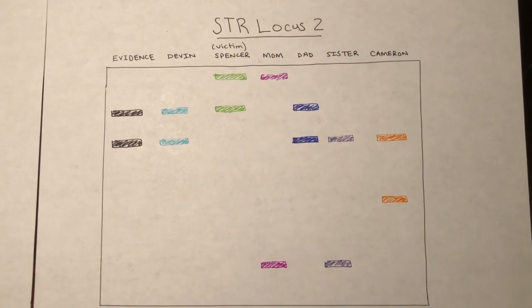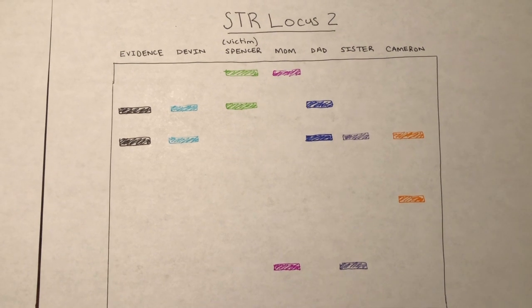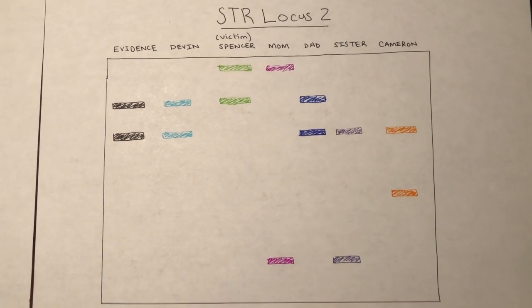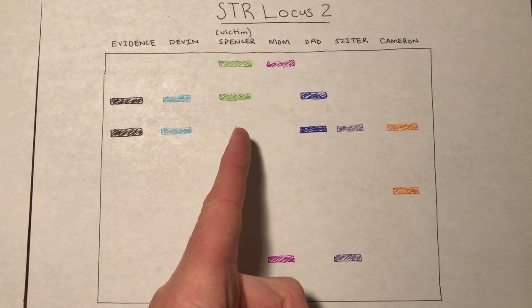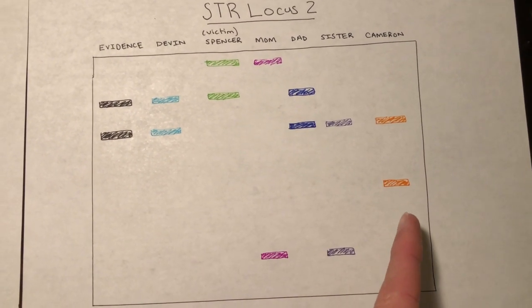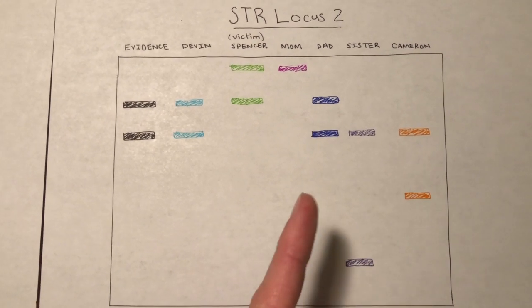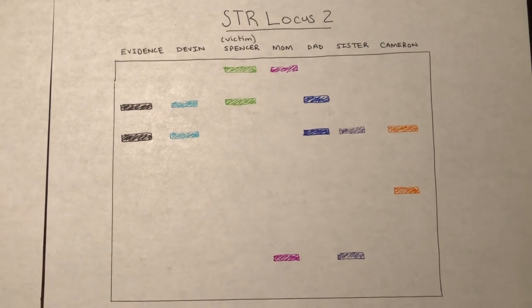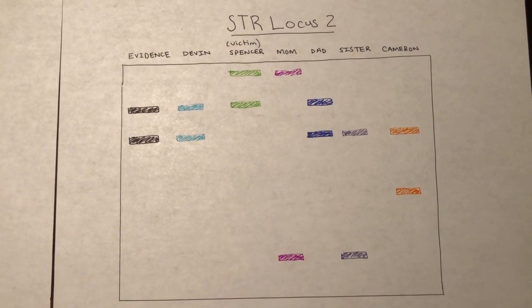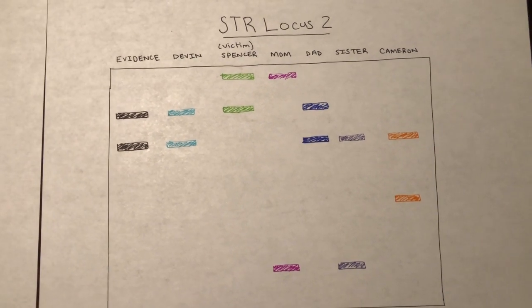Moving to locus 2 and comparing the suspects' DNA fragment sizes to the evidence, we can see that my bands don't really match the evidence, and Cameron's bands don't match either. So that would lead us to conclude that dad is the perpetrator and the one who ate the cookies. We know this because his DNA fragment sizes match the evidence sample at both loci — at locus 1 and locus 2.